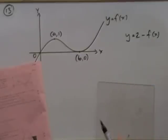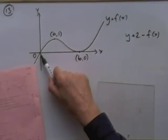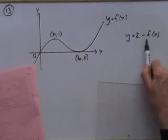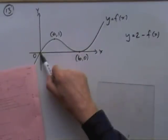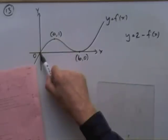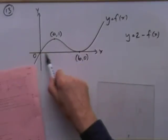You can move the points that way. The point at the origin: the new y coordinate would be 2 minus the old one, which is 2 minus 0, so it'd be at (0, 2).